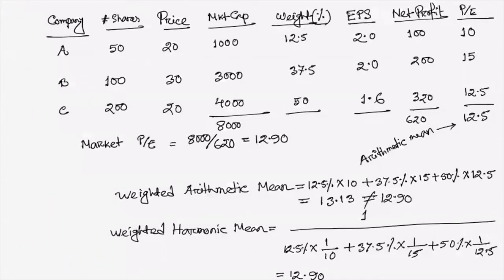So a perfect example of showing this is when you calculate the market price-earning ratio. Imagine that in a market there are only three companies: company A, company B, and company C. Company A has a market cap of 1,000 Taka, company B has a market cap of 3,000 Taka, and company C has a market cap of 4,000 Taka. And their respective price-earning ratio is 10, 15, and 12.5.